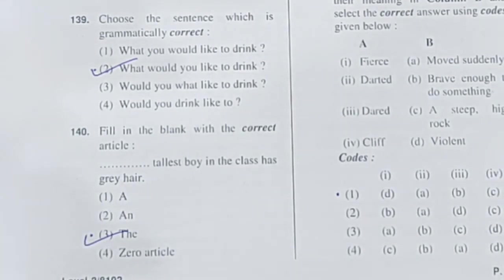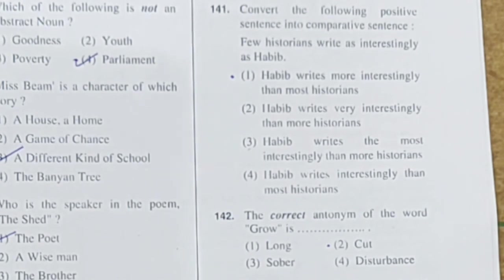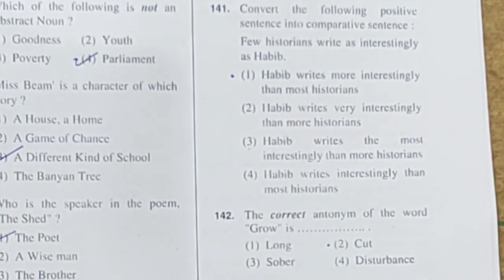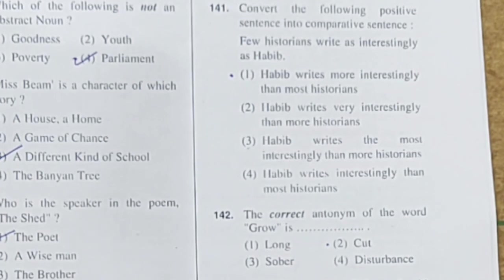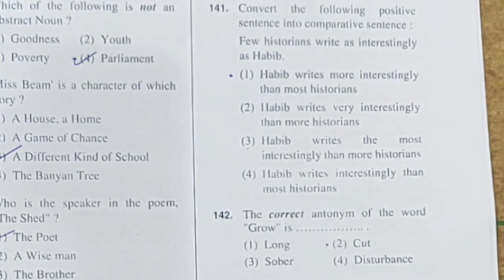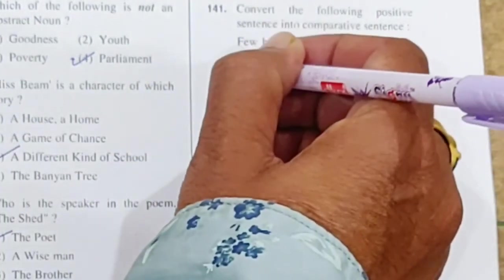Question 141: Convert the following positive sentence into a comparative sentence. 'Few historians write as interestingly as Habib.' When converted to comparative: 'Habib writes more interestingly than most historians.' Option 1 is correct.